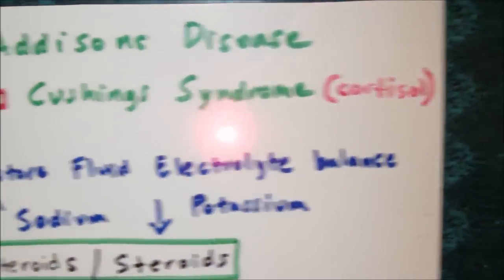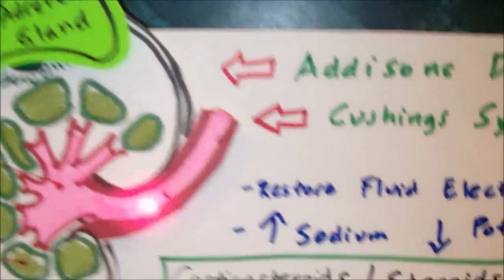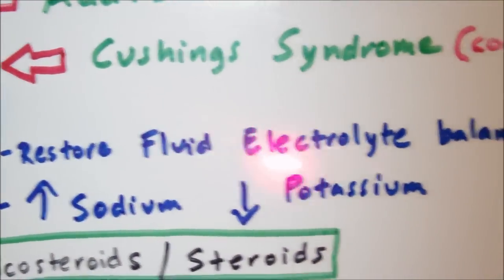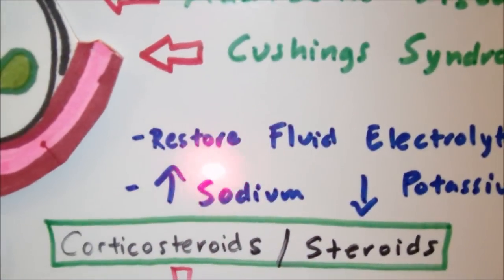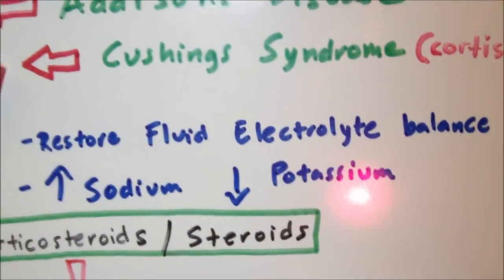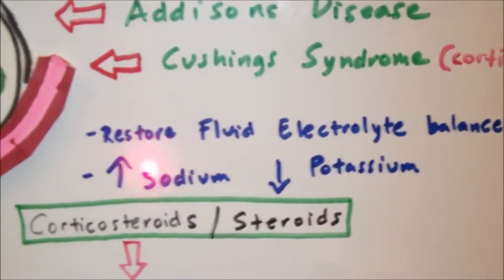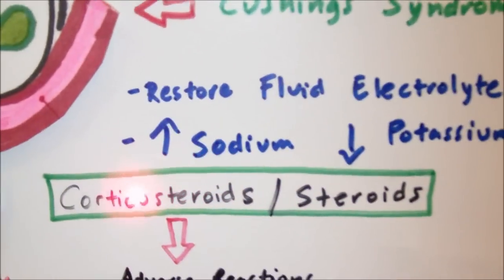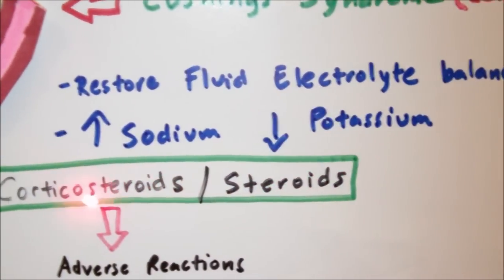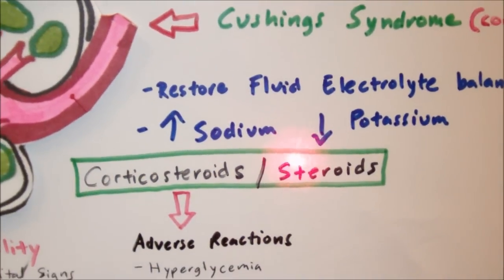So how do we treat our patient with Addison's disease? First we need to restore the fluid electrolyte balance. We need to give the patient a diet high in sodium and low in potassium. We also need to replace the adrenal hormones, which would involve replacing the cortisol, sometimes in the form of hydrocortisone tablets or prednisone tablets.